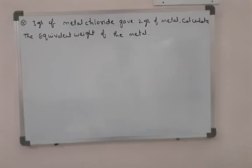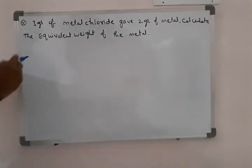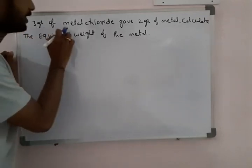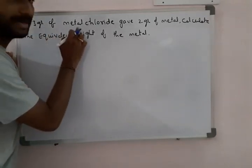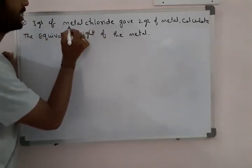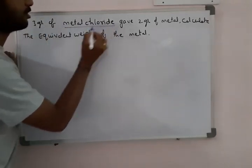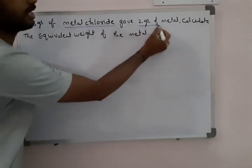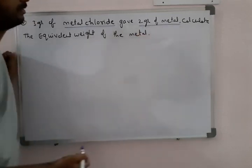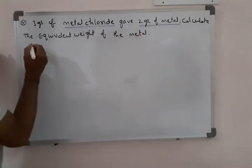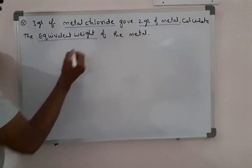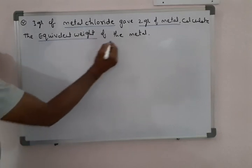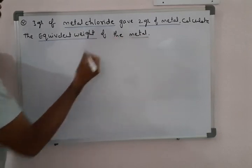See the next problem of a simpler model. In 3 grams of metal chloride, 2 grams of metal is given. We need to calculate the equivalent weight of the metal.